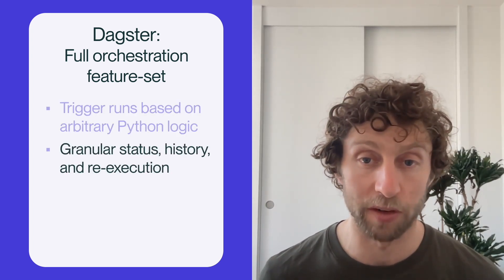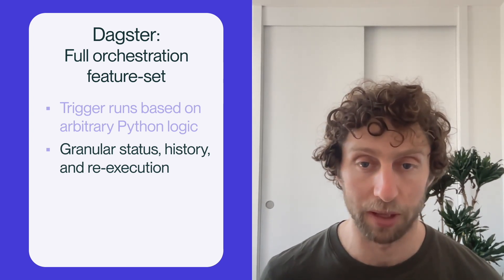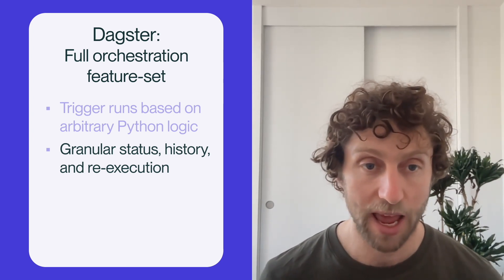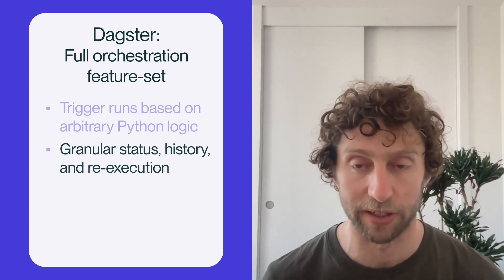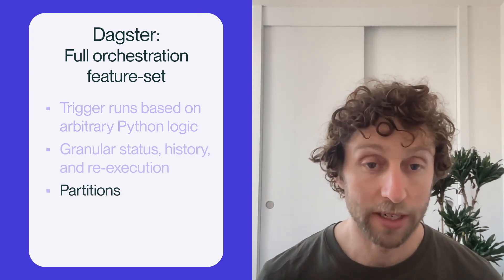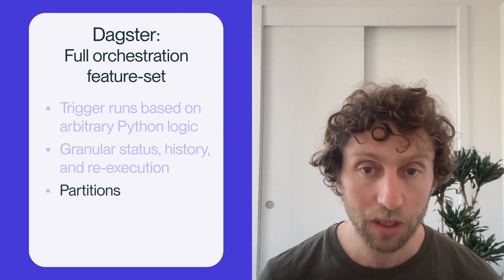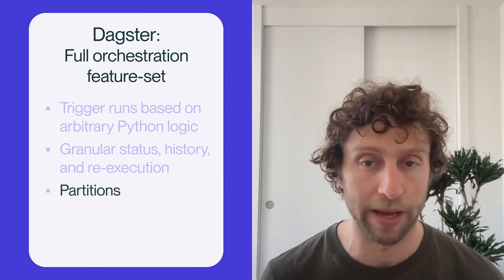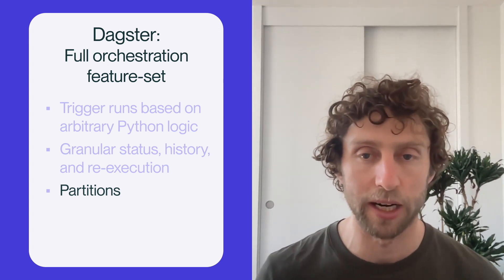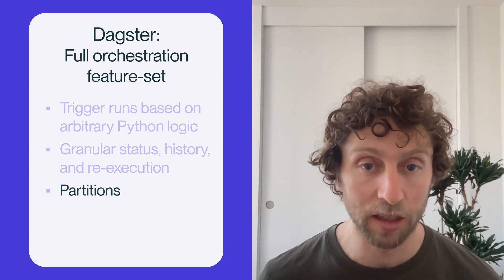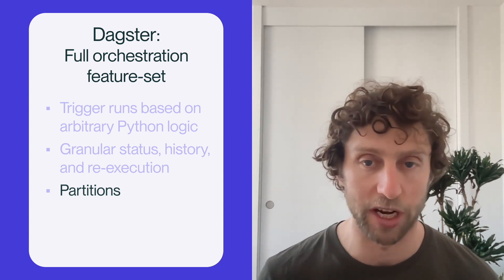Dagster also offers granular observability and operational tooling. For each dbt model in your pipeline, you can track when it fails, every time in the past that it ran, and pick up where you left off after fixing problems. Dagster has rich support for partitions — an approach to data management that allows you to update your data without dropping and recreating the entire table, while still maintaining an interpretable record of the status of your asset and how it changed over time.